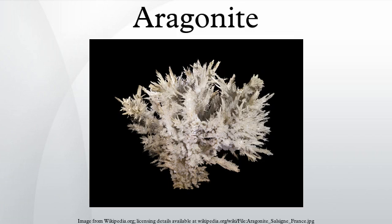Aragonite's crystal lattice differs from that of calcite, resulting in a different crystal shape — an orthorhombic system with acicular crystals. Repeated twinning results in pseudo-hexagonal forms.